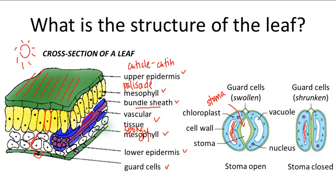So in summary, the leaf is the photosynthetic organ of the plant, and it consists of the cuticle, epidermis, mesophyll, bundle sheath cells, vascular tissue, and the guard cells.